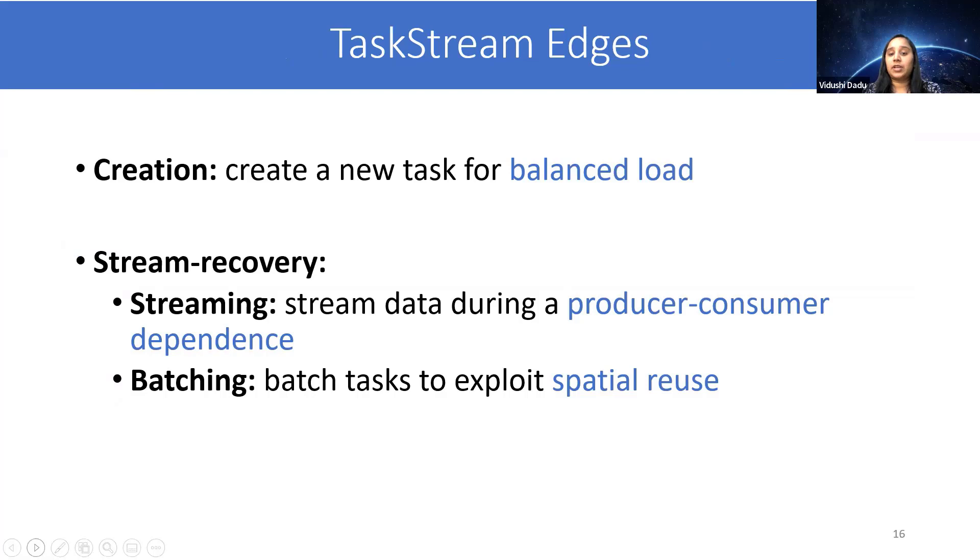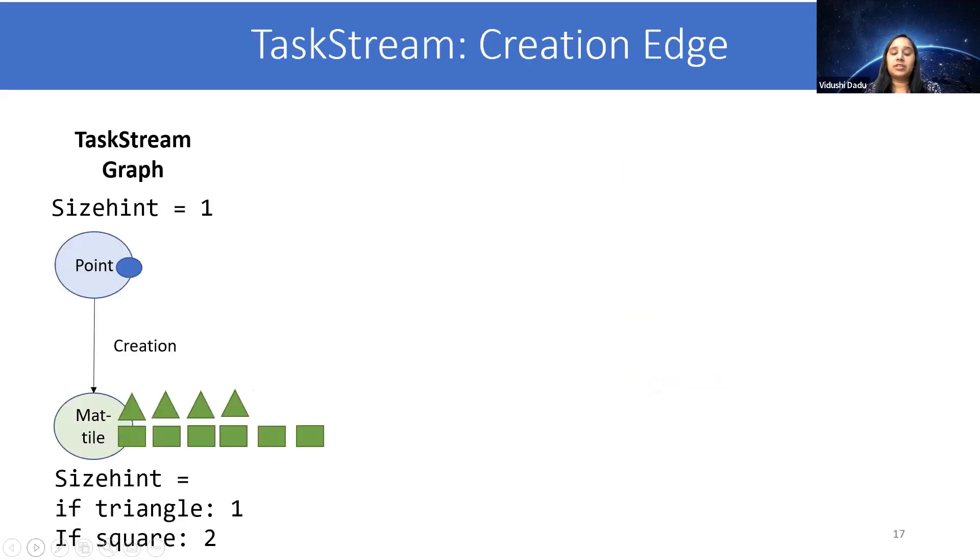The most important aspect of TaskStream is how we exploit the inter-task communication and computation structure, which we do using three edges. The first one is creation that enables balanced load. And then the other two are stream recovery edges, which involves streaming edge for producer-consumer dependence and batching edge for exploiting spatial reuse.